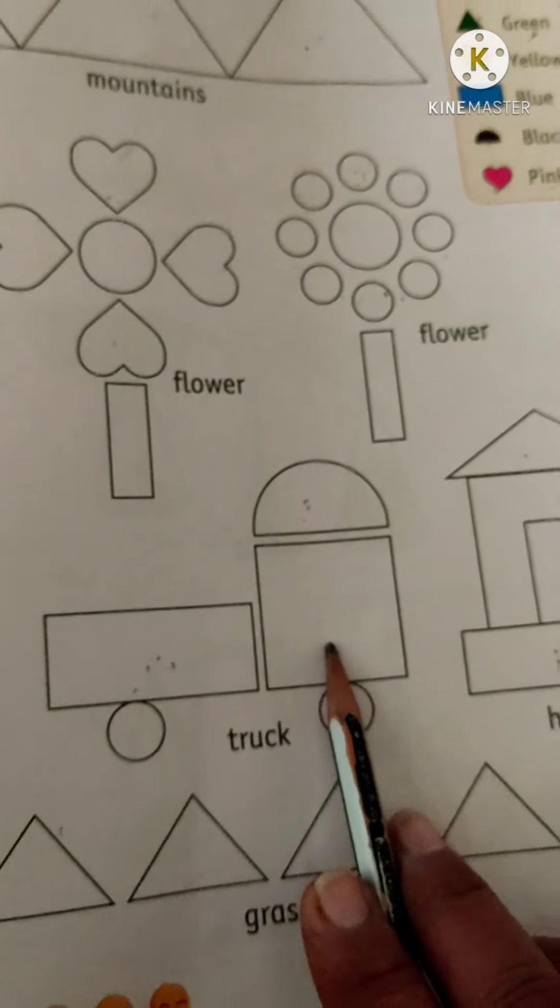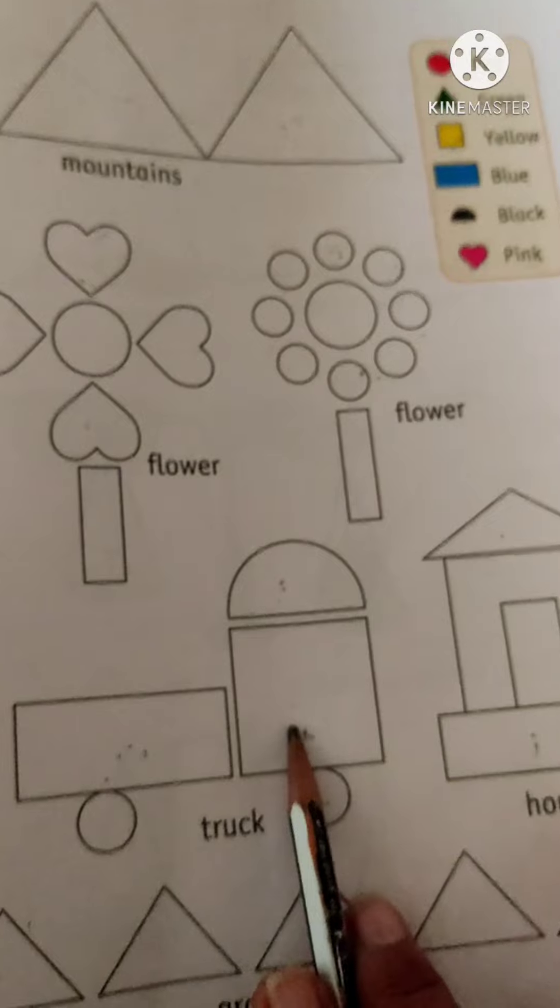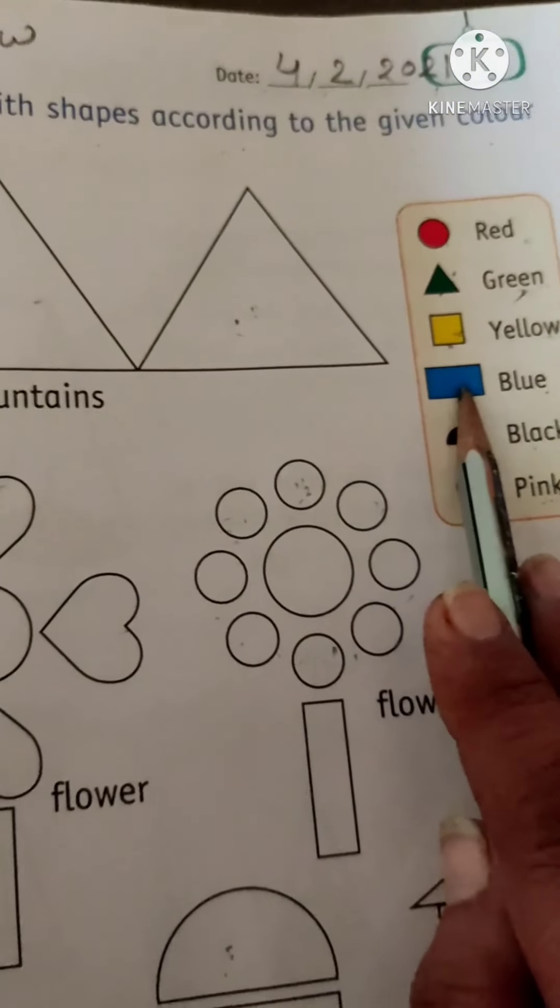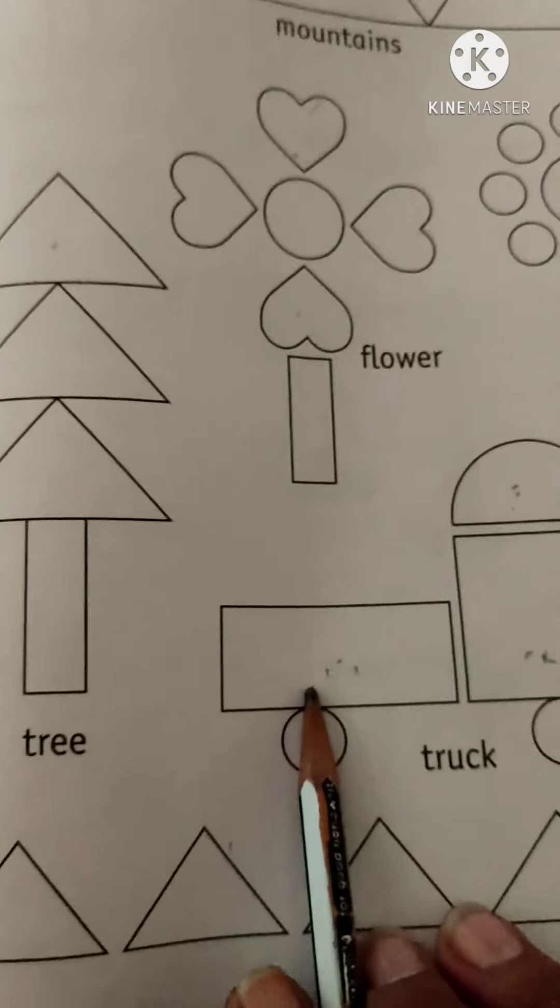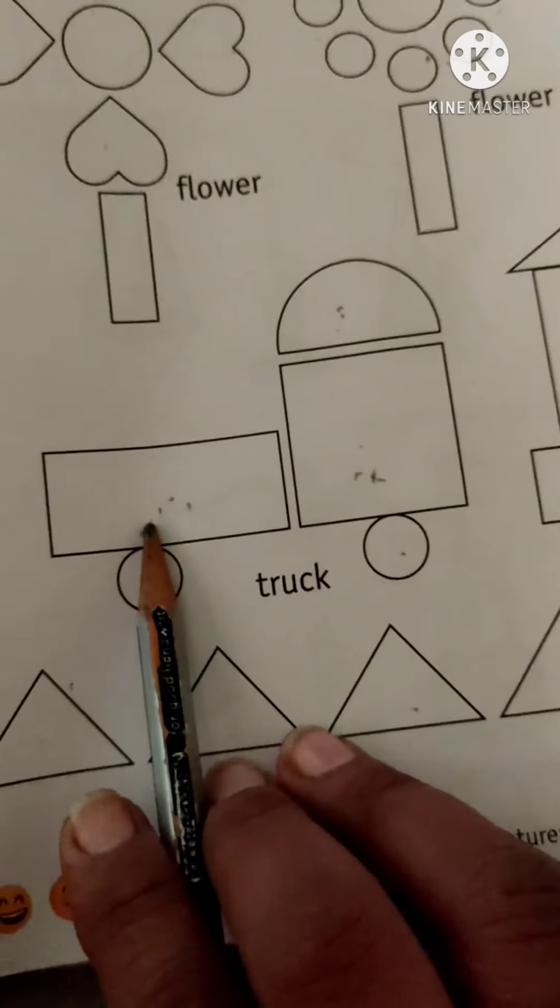Then, yellow color for the square. So, fill the yellow color on square. Then, blue color for the rectangle. Fill the blue color in rectangle.